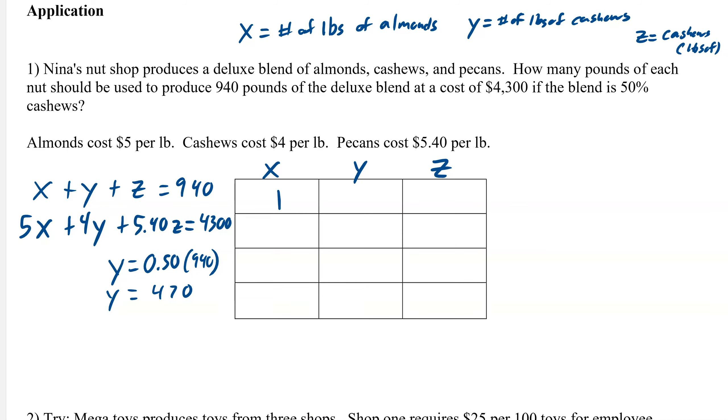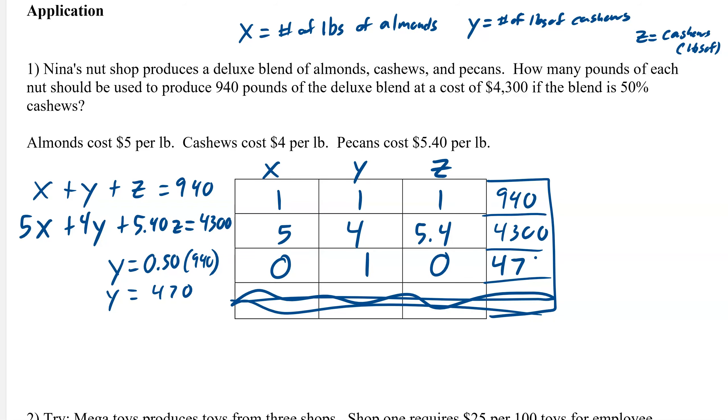So now we can write that out. It's 1, 1, 1, and then our final column is those numbers. So 940. And then 5, 4, 5.4, and 4,300. And then our last one: 0, 1, 0, 470.